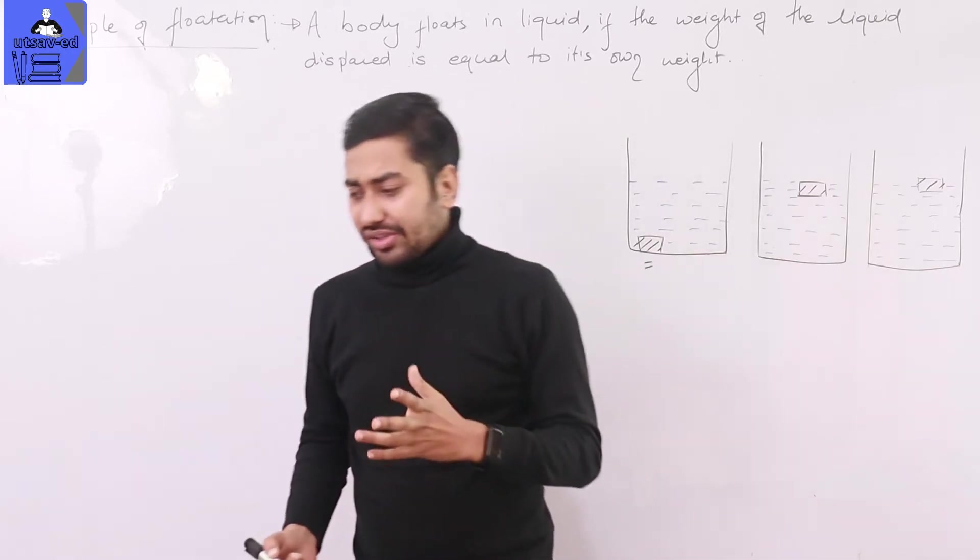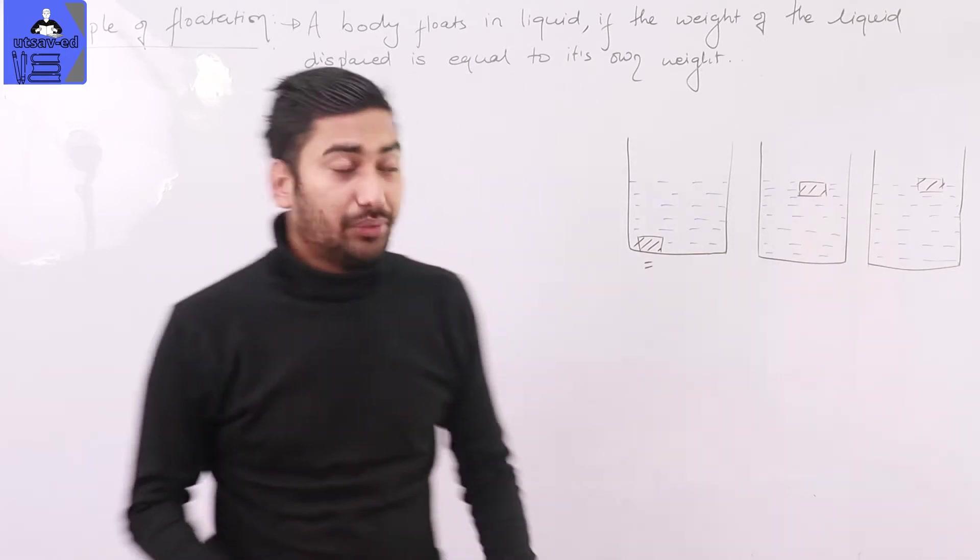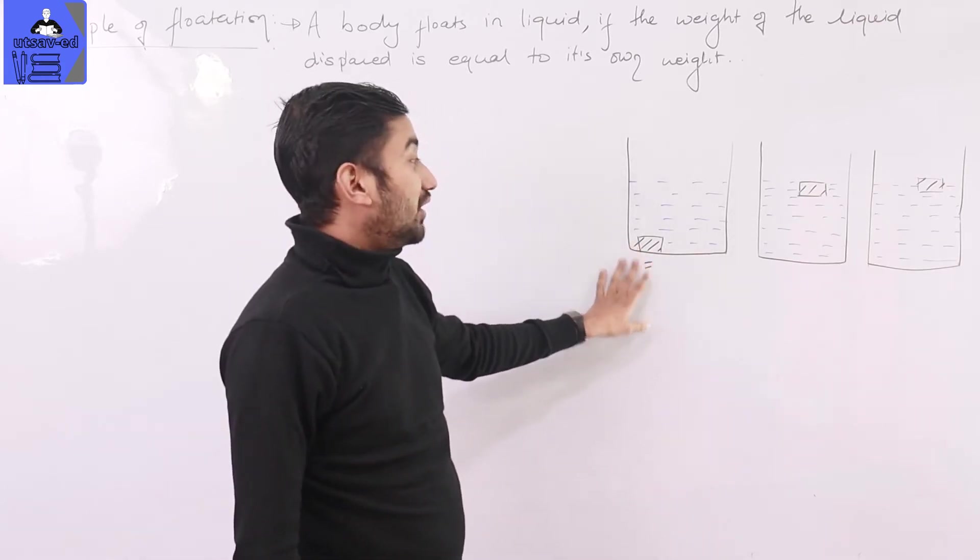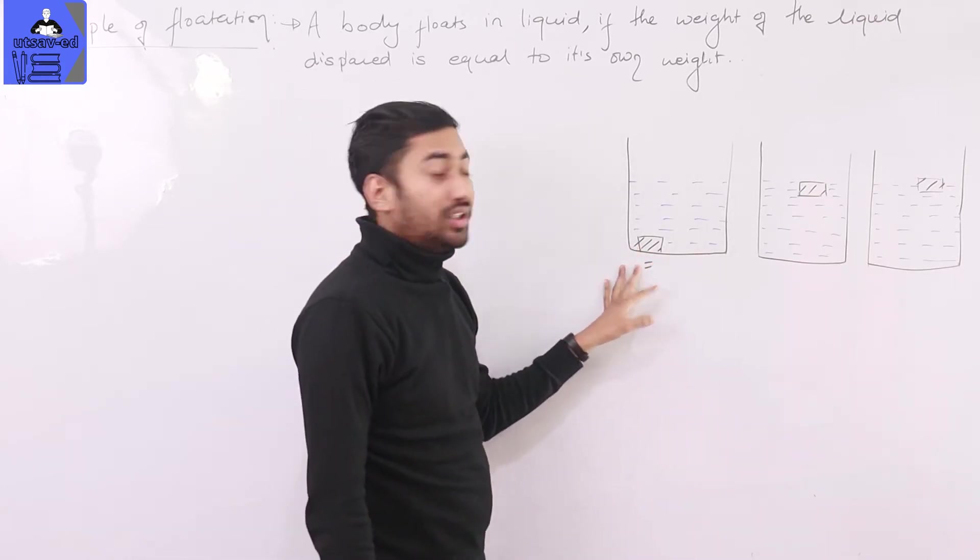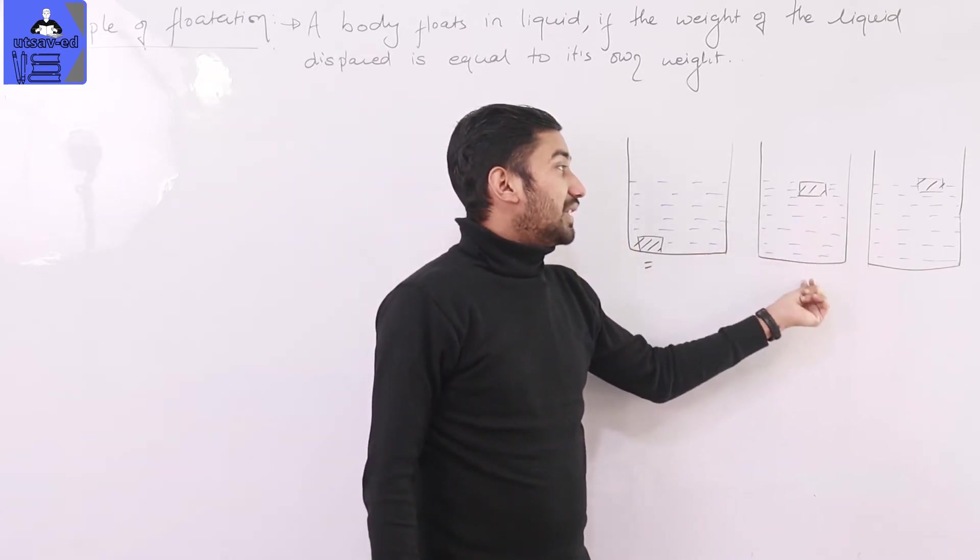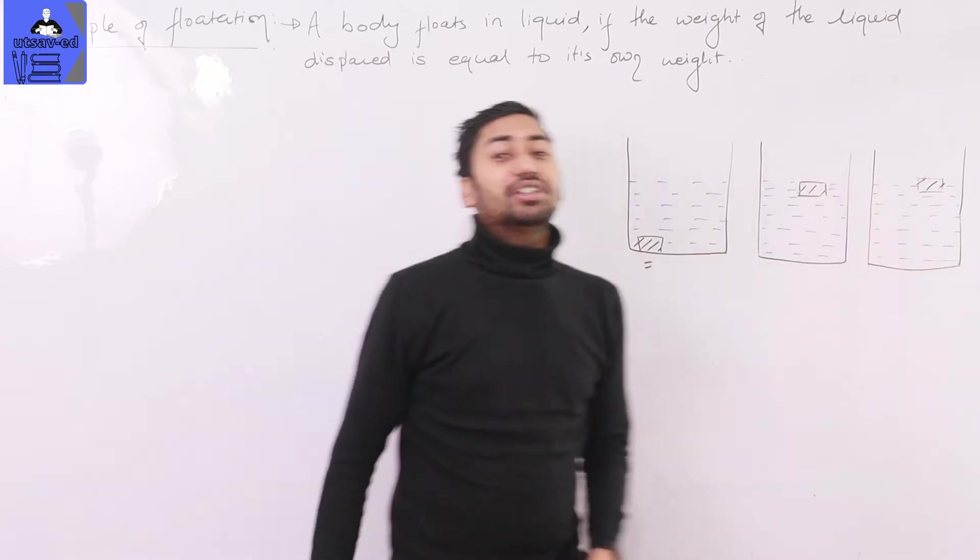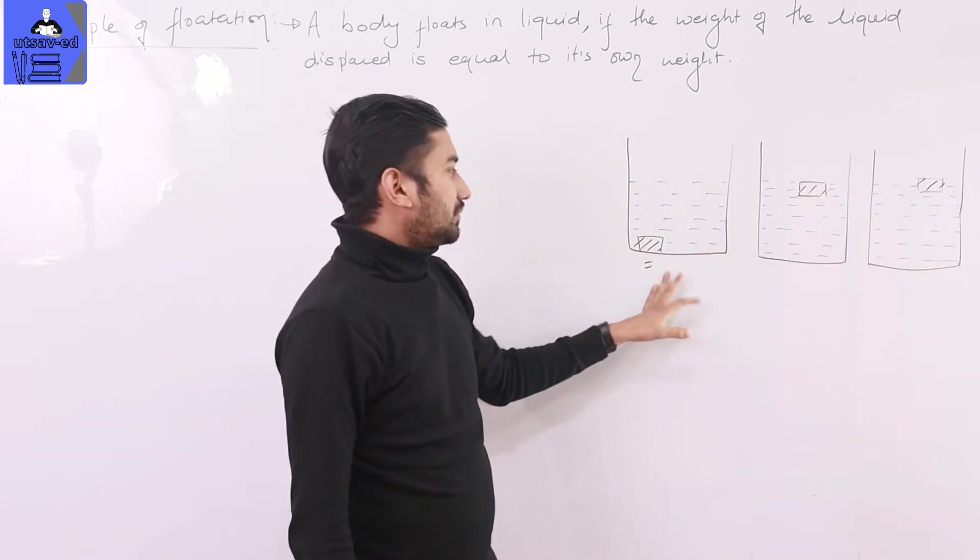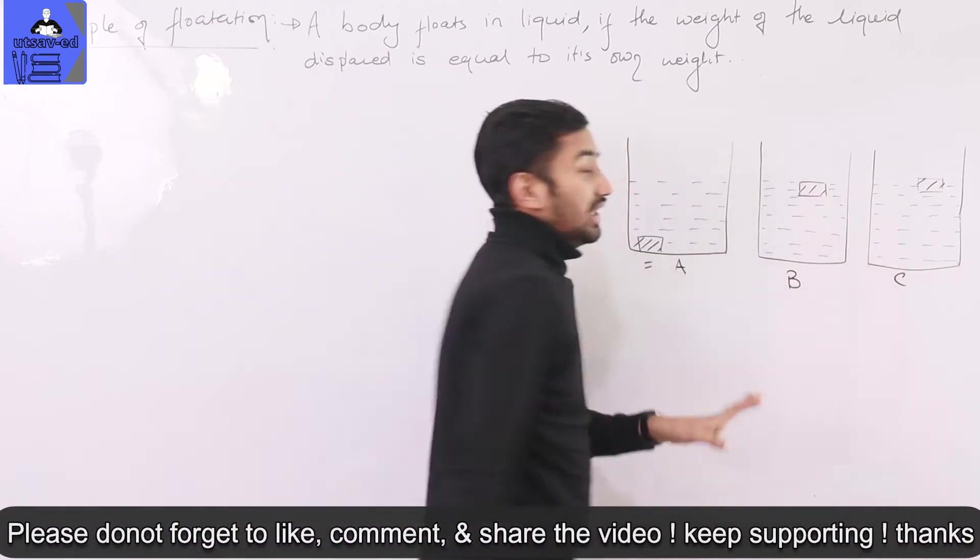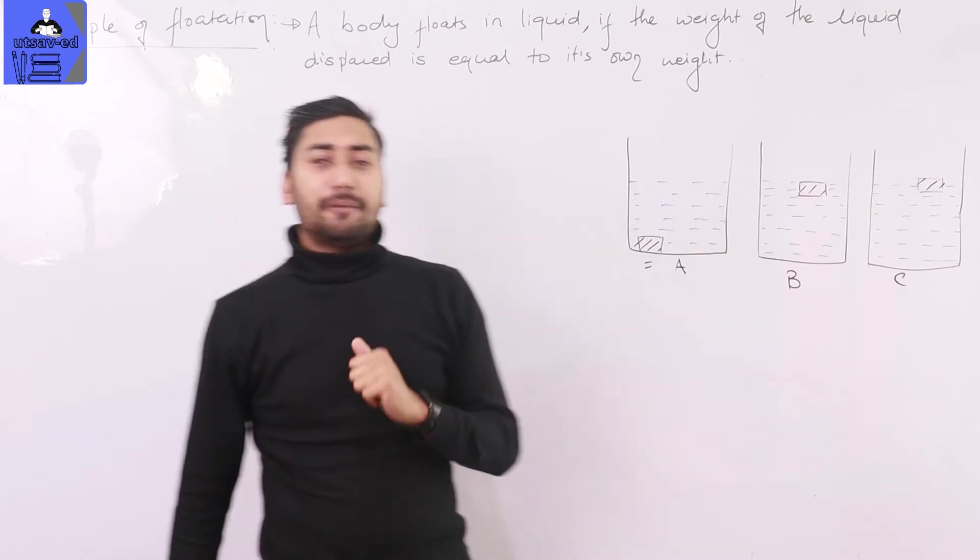Under which conditions does a body float or sink? We are going to make three figures. Figure A shows the body sinking, figure B shows the body floating, and figure C shows the body not sinking. These are conditions A, B, and C.